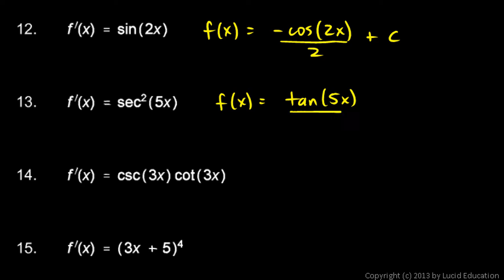And if we take the derivative of the tangent of 5x, we get secant squared 5x times 5. So, if we put a 5 in the denominator there, that will get rid of that extra factor of 5. And then, of course, we need the plus c.